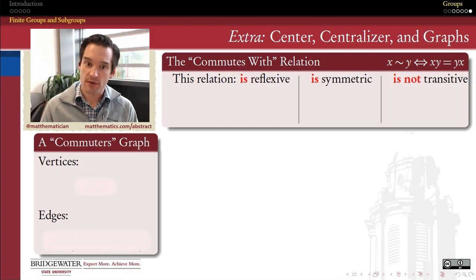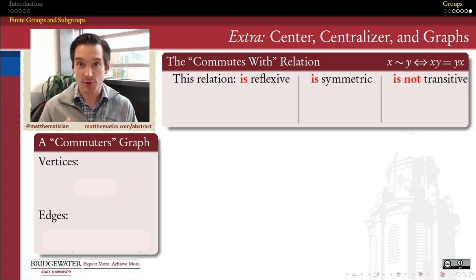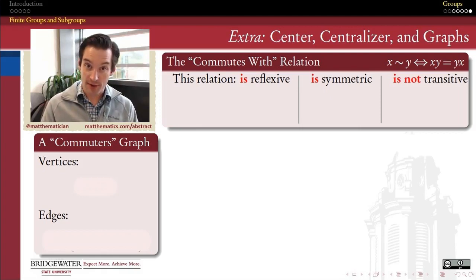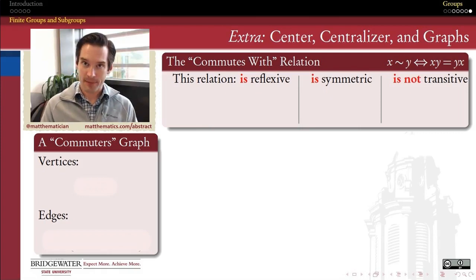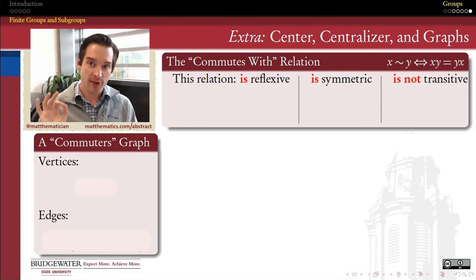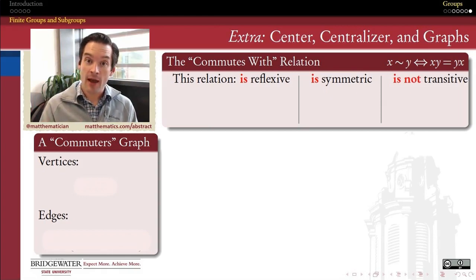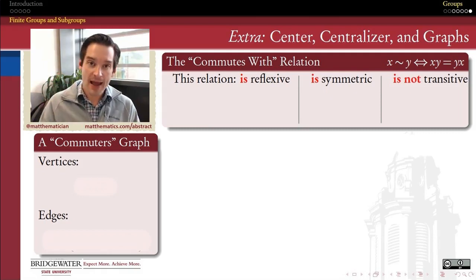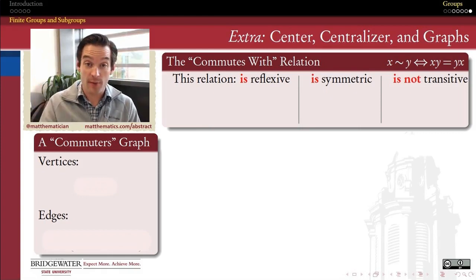is to have a visual representation for these things. What do they look like? How can I visualize what they are? A really convenient way to visualize the center and the centralizer in a group is to use a graph. When I say graph, I don't mean graph in the sense of graphing a function in the x-y plane like we learned in algebra in high school. I mean a graph in the sense of graph theory. A graph in graph theory has a set of vertices — think of these as a set of points — and edges, which we can think of as lines that connect some of those points to others.